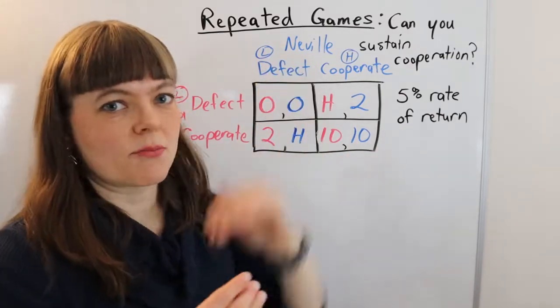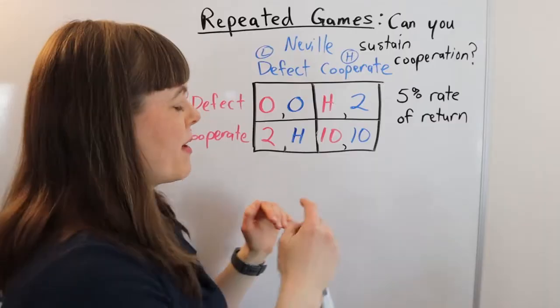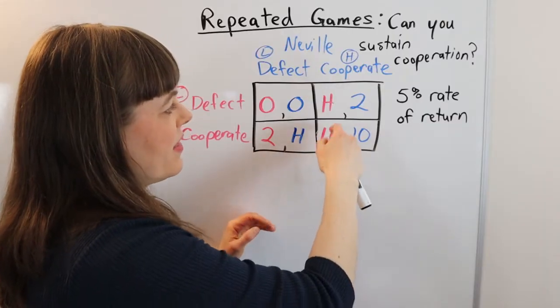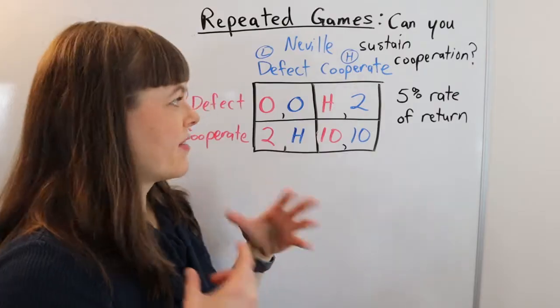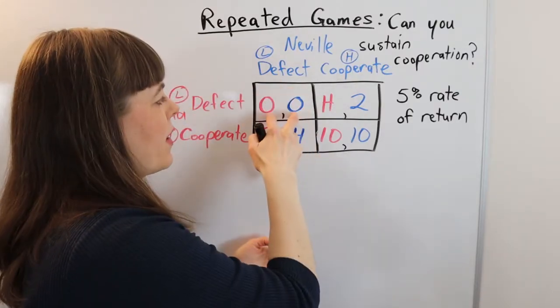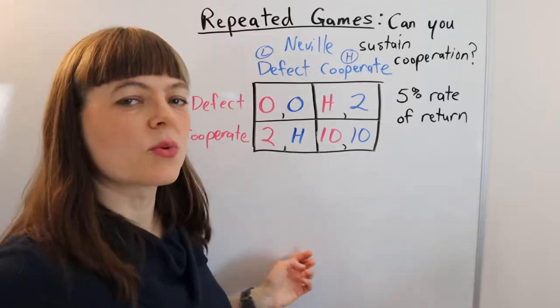Or do they defect and set the price low and undercut their competitor, in which case they get this windfall from undercutting their competitor, but the next round their competitor is going to set their price low and they end up in this sort of bad equilibrium.